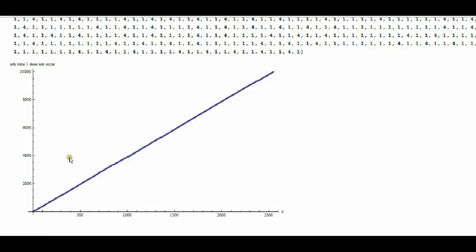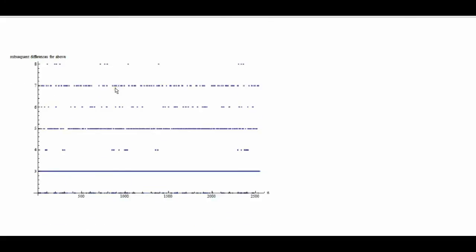So what we're plotting here are the n versus the nth time step that rewrite operation one doesn't get applied. And so obviously this is a linear curve, but if we have a look at the differences between this curve, again, we see a remarkably complex kind of behavior. And I haven't got very far analyzing this. It really seems like there's very little pattern to be seen.